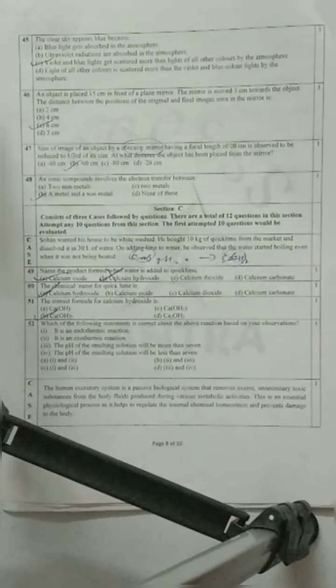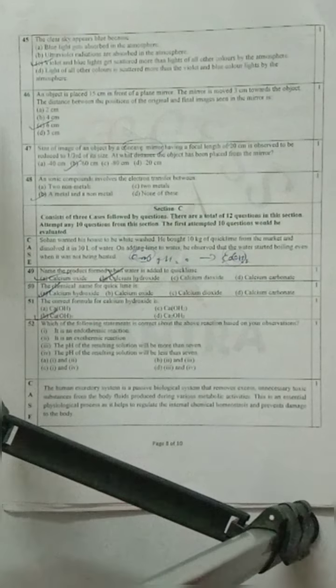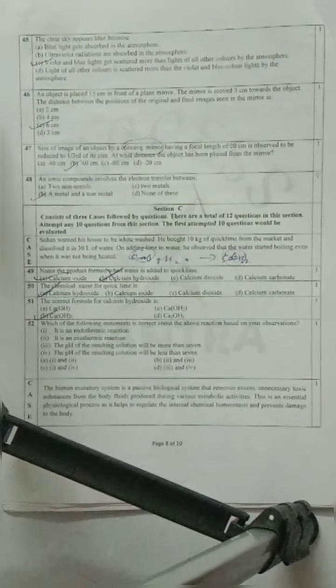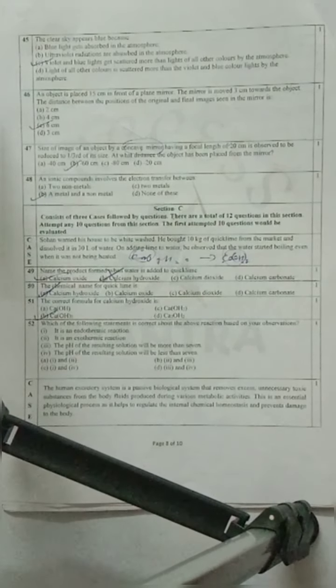Question 45: The clear sky appears blue because? Why does it look blue? The violet and blue light are scattered. Only violet and blue light are scattered, not the other colors. That's why it appears blue. So option C is your correct option.